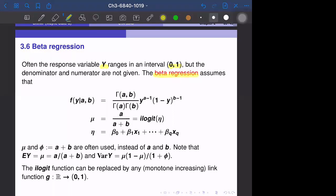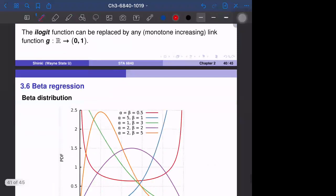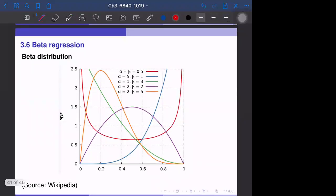The beta regression assumes that y follows the beta distribution with parameters a and b. This is the distribution between zero and one. The distribution is shown in the next page - for example, the orange one where α equals 2 and β equals 5.